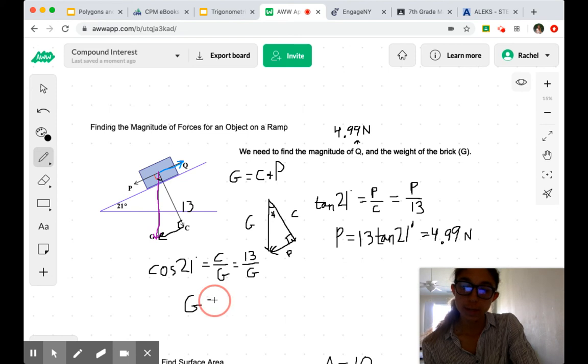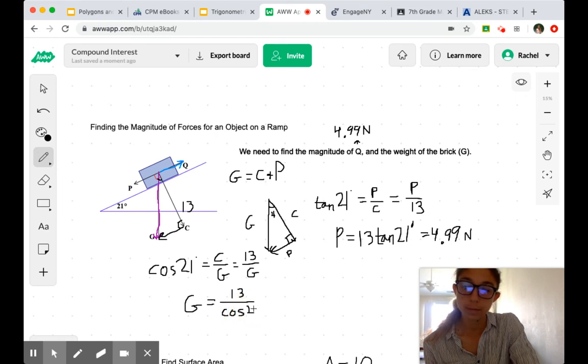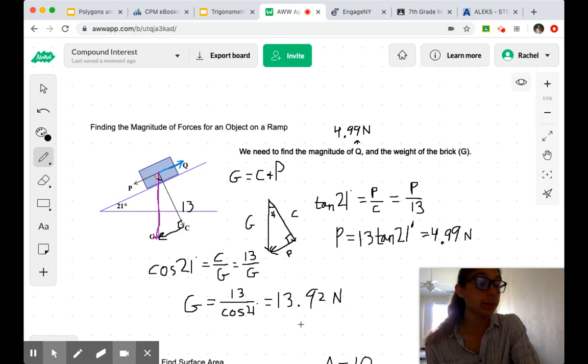G equals 13 divided by the cosine of 21 degrees. So, when we compute that and we round, we get 13.92 N. So, the weight of our brick is 13.92 N as represented by G.